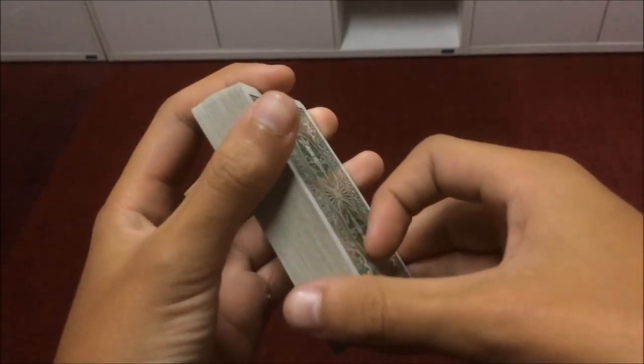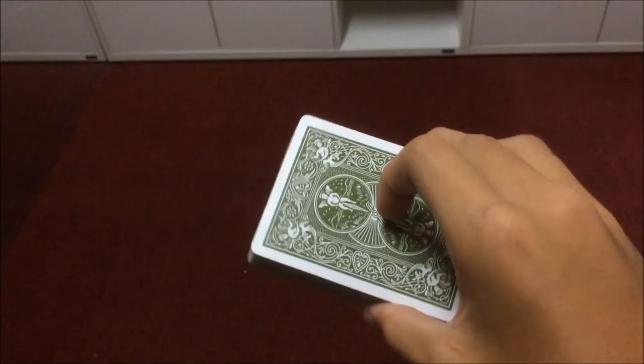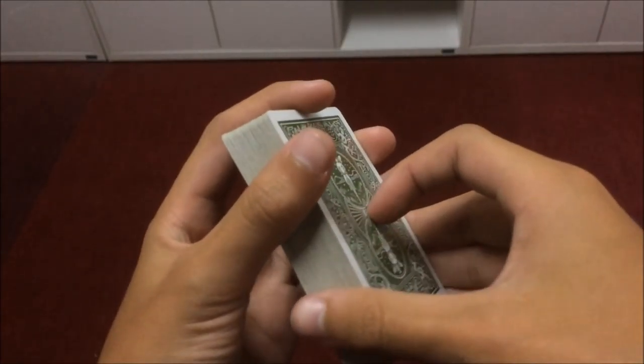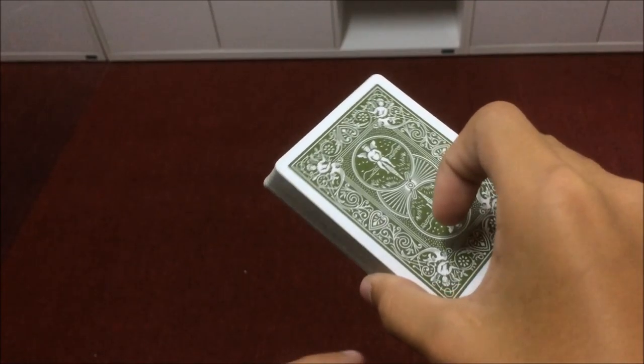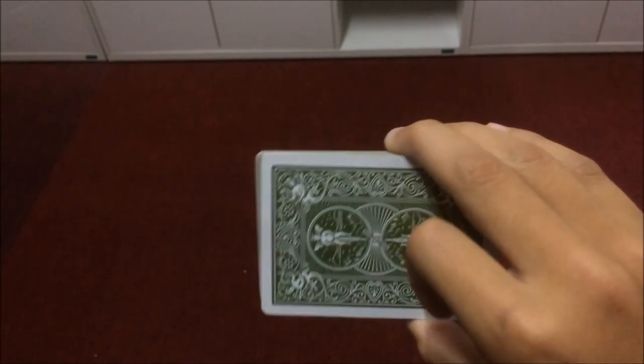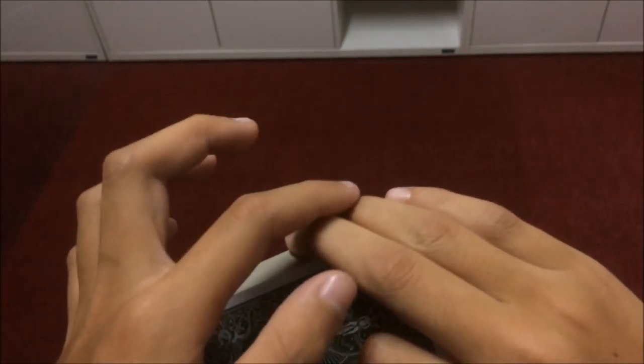What you're doing is holding the grip of the deck like this in your right hand. Your thumb is at the long edge on the left side of the deck, your middle, ring and pinky fingers at the right hand side of the deck on the long edge.